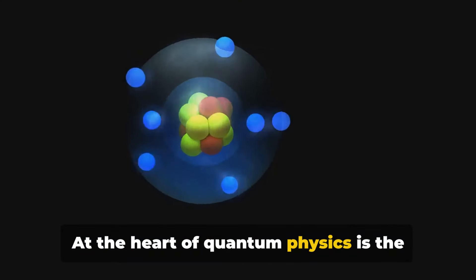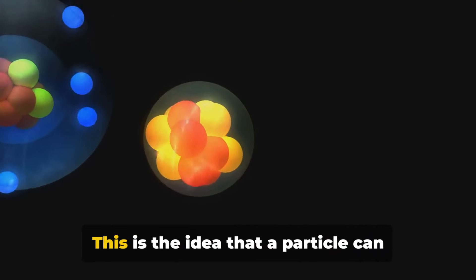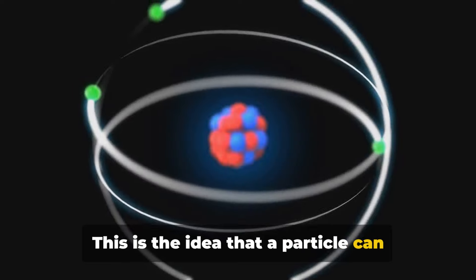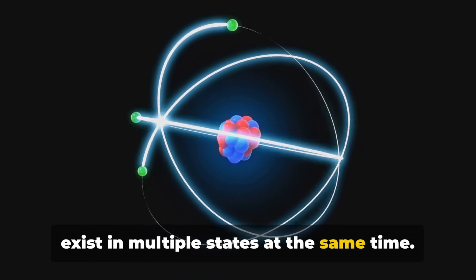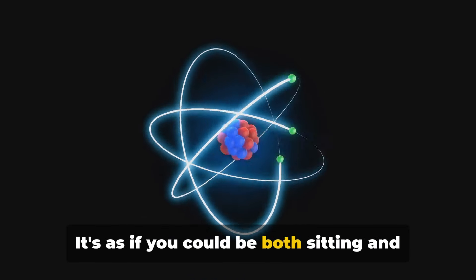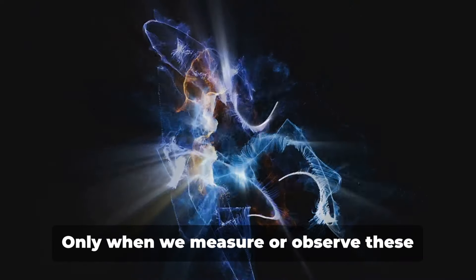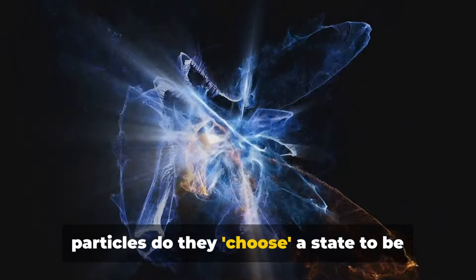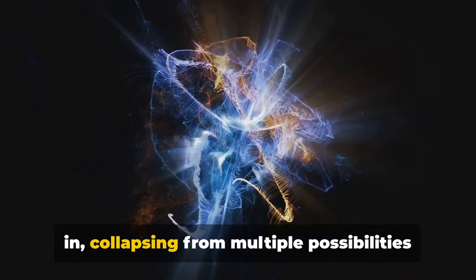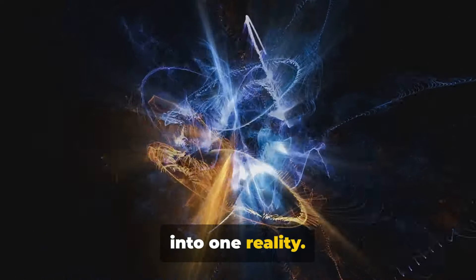At the heart of quantum physics is the principle of superposition. This is the idea that a particle can exist in multiple states at the same time. It's as if you could be both sitting and standing, or both here and there, all at once. Only when we measure or observe these particles do they choose a state to be in, collapsing from multiple possibilities into one reality.